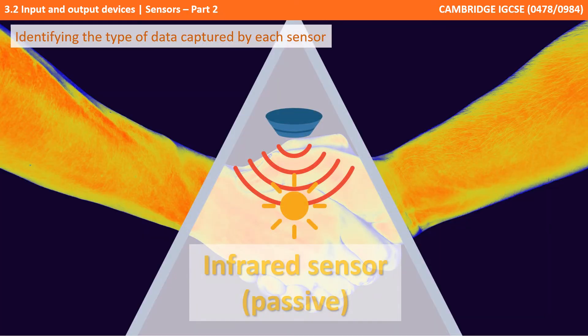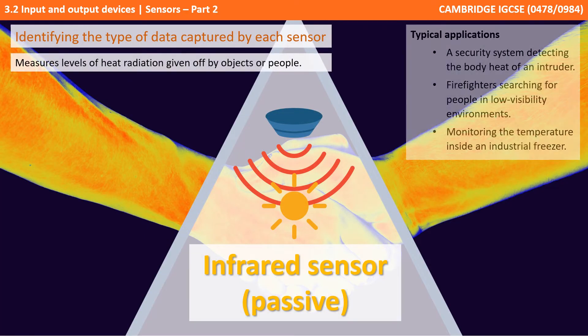Switching to passive infrared sensors, this measures the heat radiation given off by an object. Security systems can use this to detect the body heat of an intruder. Firefighters use it for detecting human bodies in very smoky environments. It can also be used to monitor the temperature inside industrial freezers.